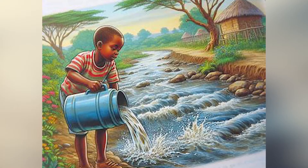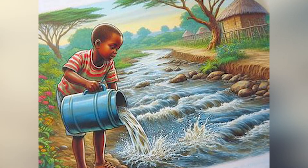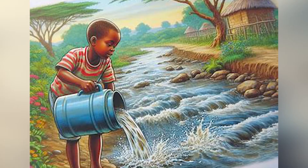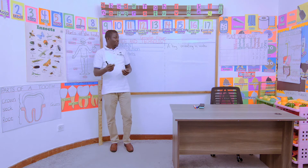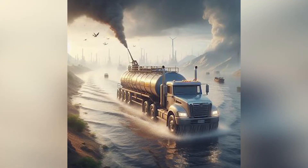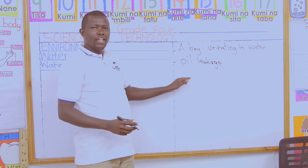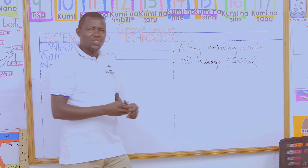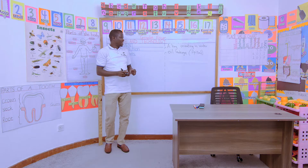That is picture one — we can see a boy urinating in the water. For picture number two, what can you see? Picture two: it is a vehicle filling water from the river, but at the same time it has an oil leakage, so the oil is dripping into the water — oil leakage from the vehicle, and the oil is being spilled into the water.